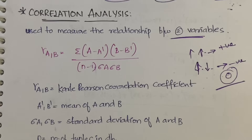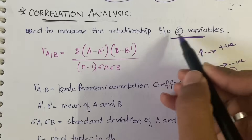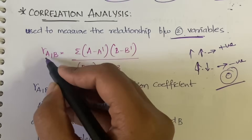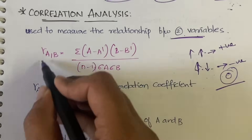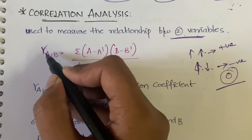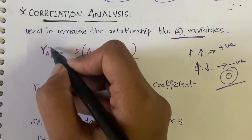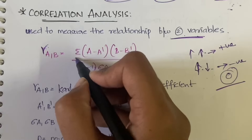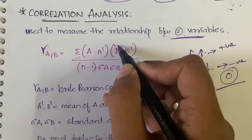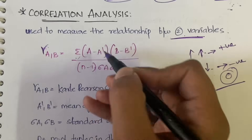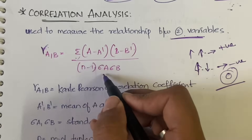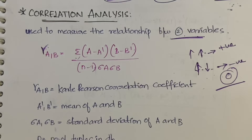How do you calculate the correlation coefficient? Correlation analysis is used to measure the relationship between two variables, and the correlation coefficient is denoted as gamma or r. Gamma of A comma B equals sigma of (A minus A-bar)(B minus B-bar), divided by (n minus 1) times sigma-A times sigma-B.